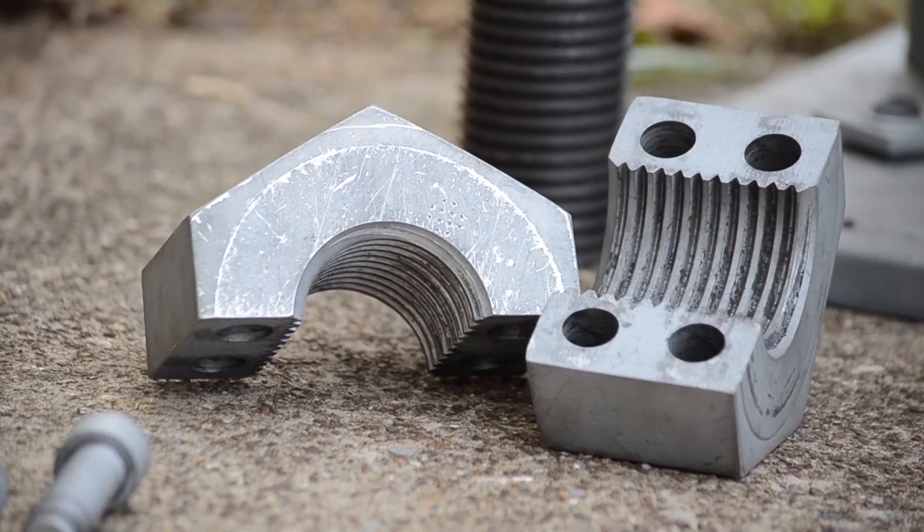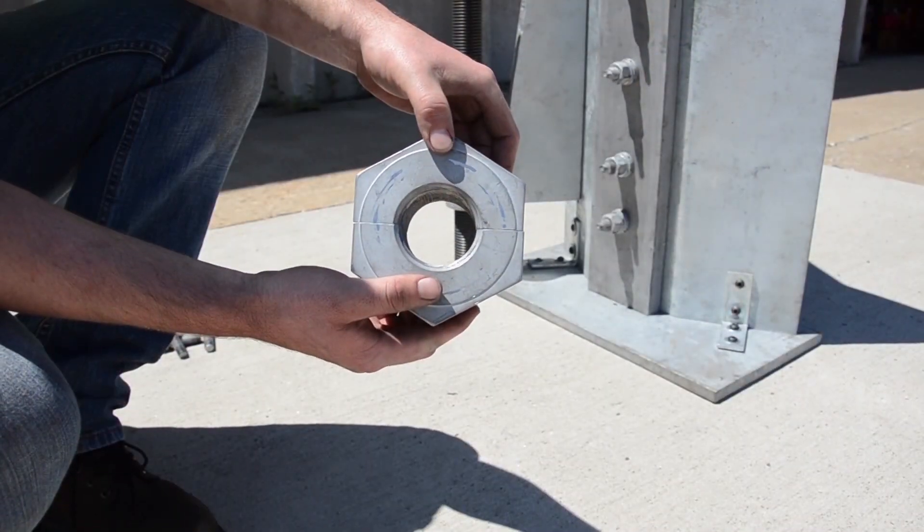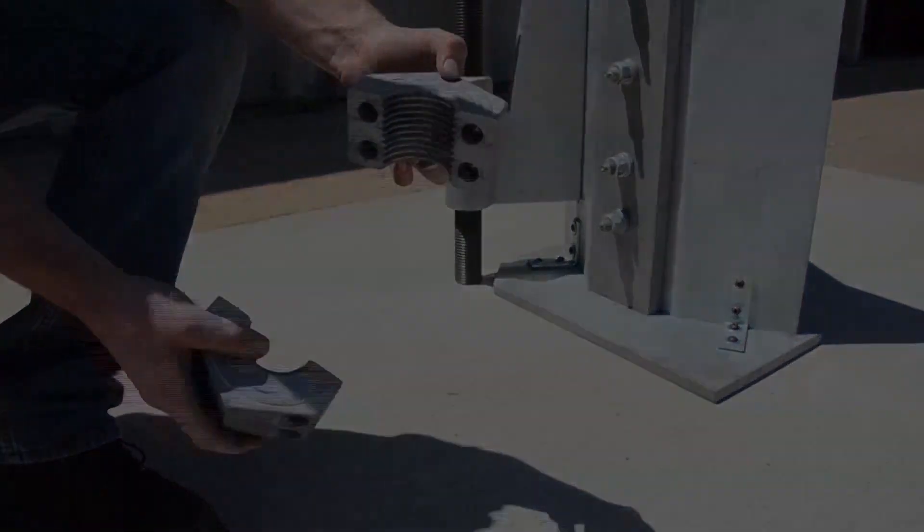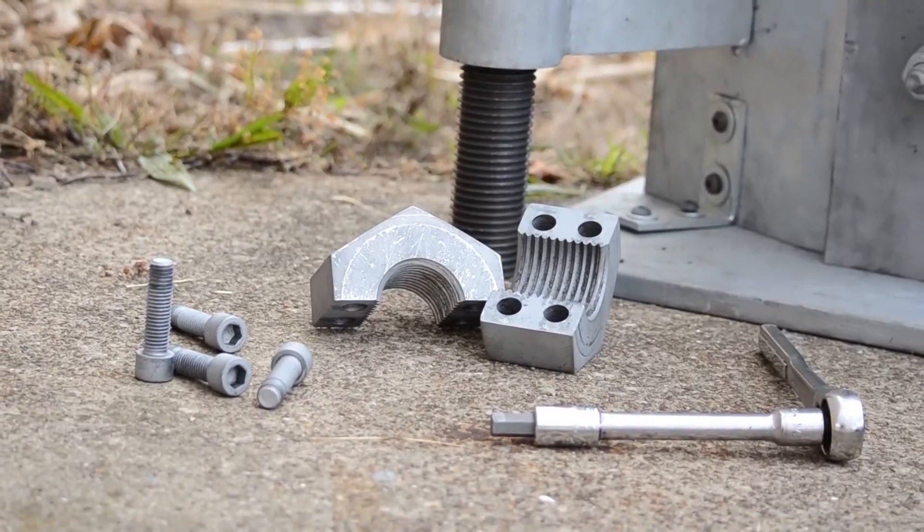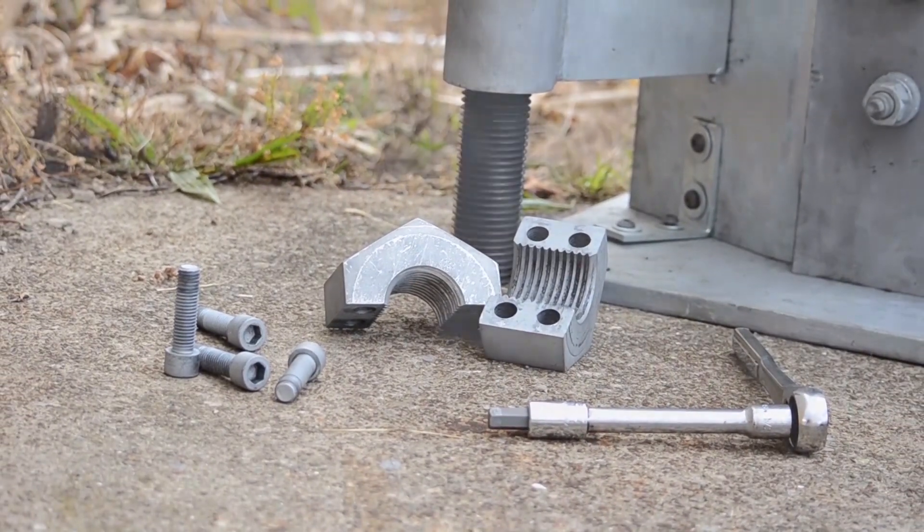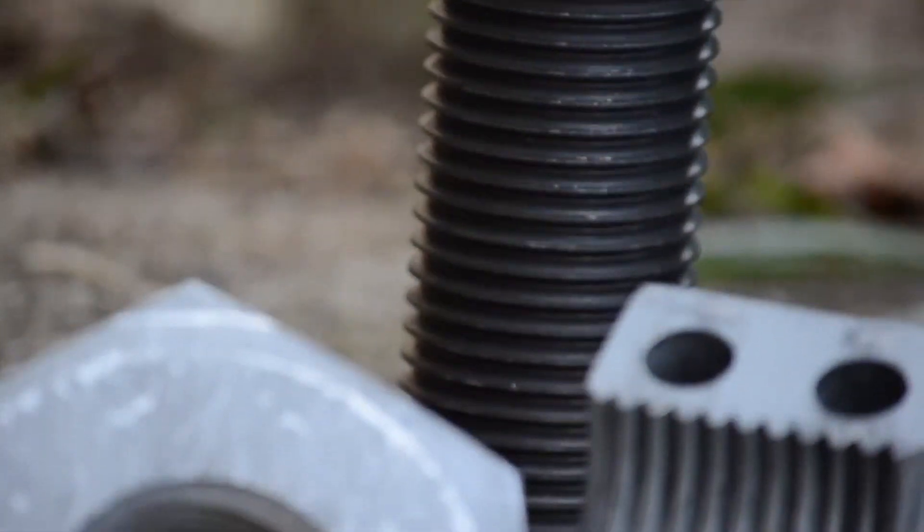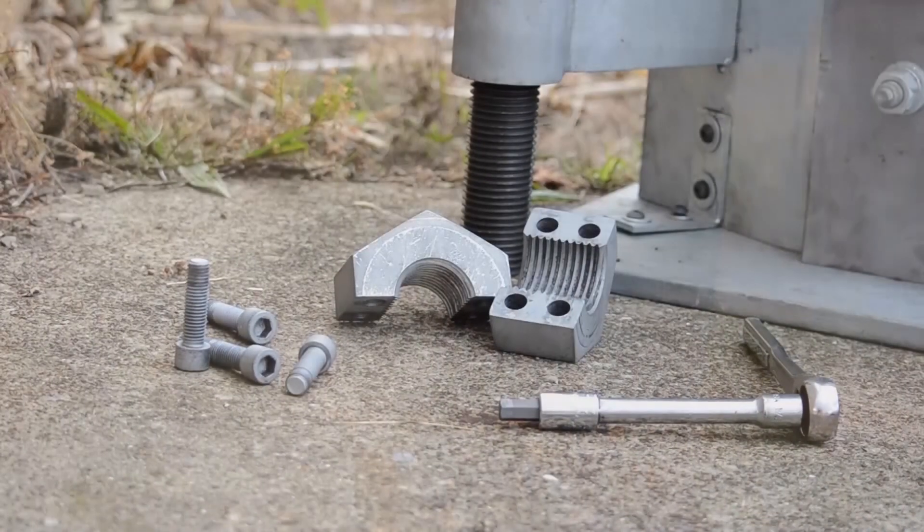Welcome to the new patent-pending ALLFASTENERS split nut. This is a split nut used for placing under support structures such as tower bases that need to have anchor rods installed for modification. These nuts make it possible to install additional anchor rods through an existing base plate.